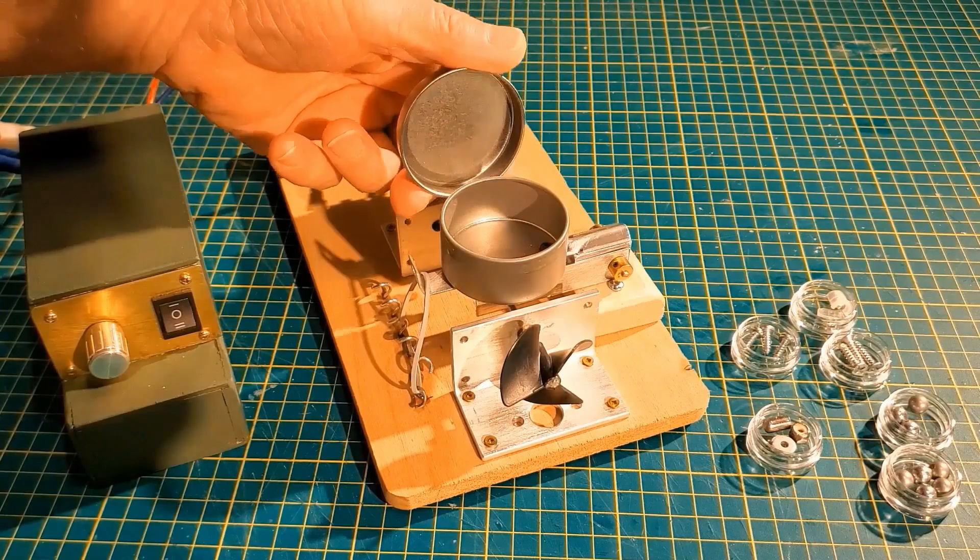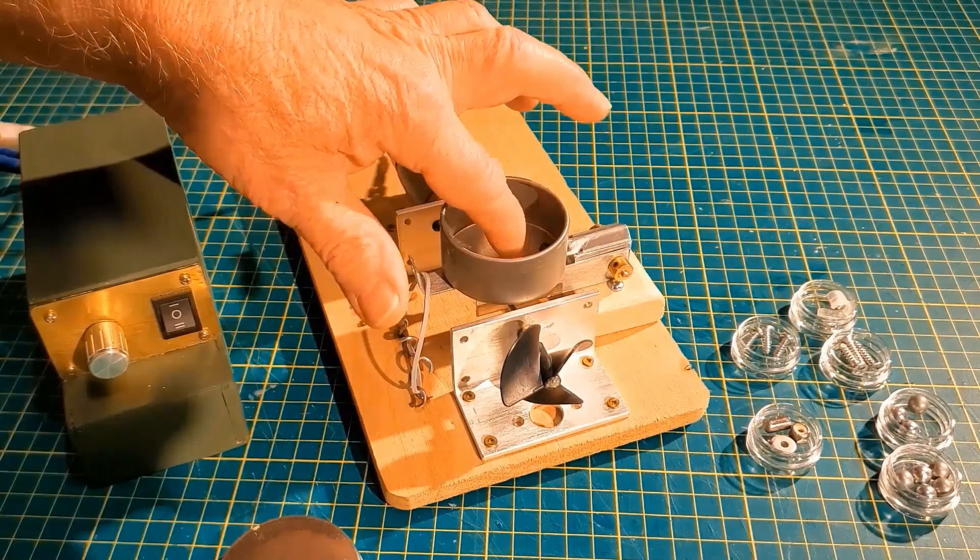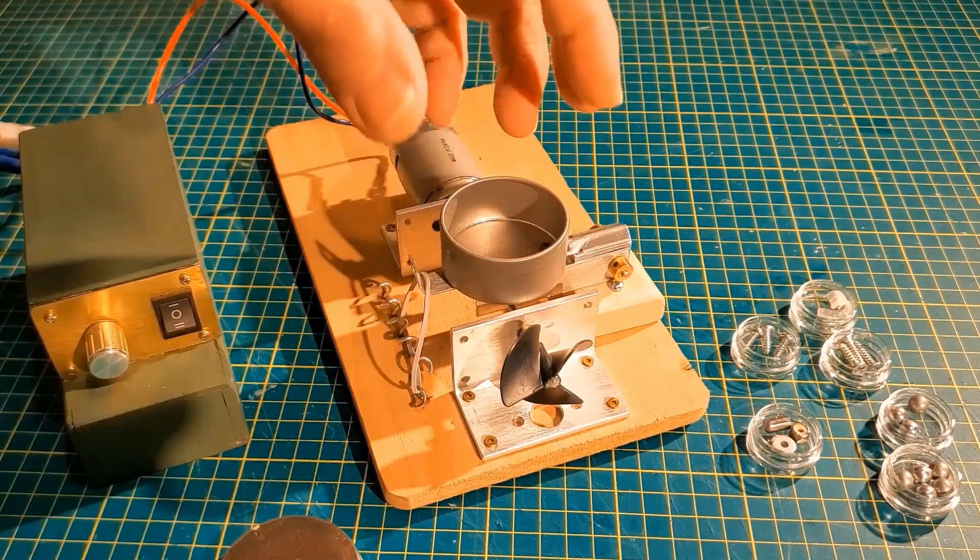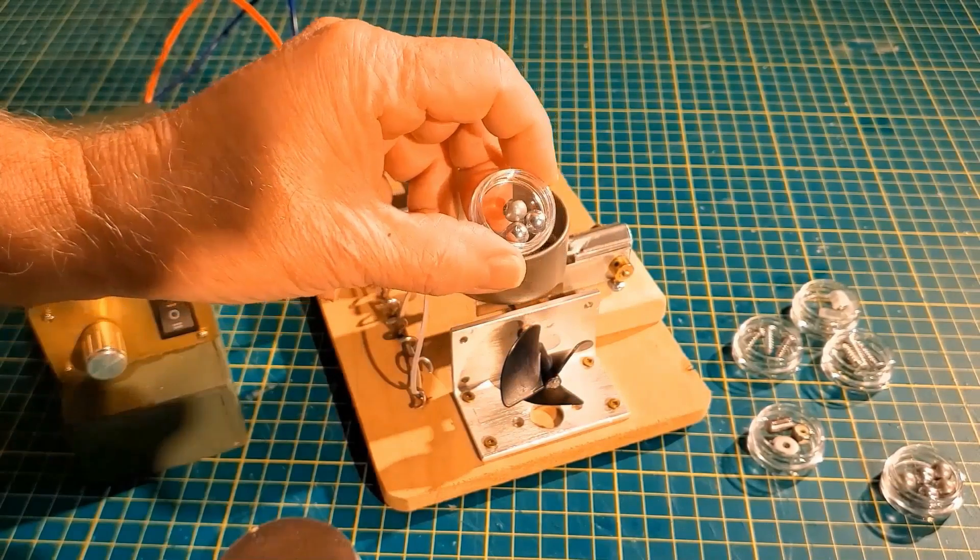So now the next step is to take off the lid and add in small objects inside the can to create a secondary vibration. So let's try three steel balls.